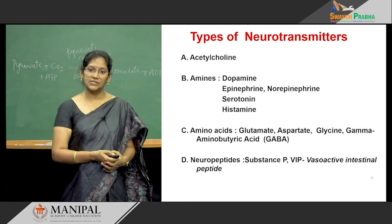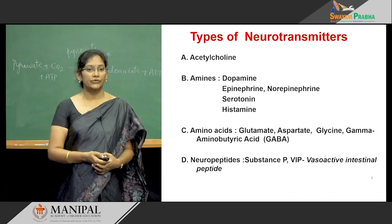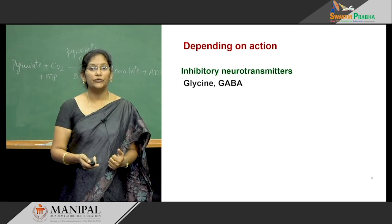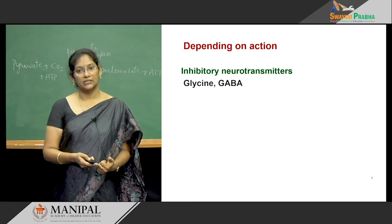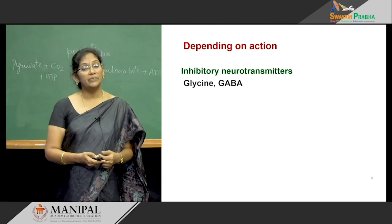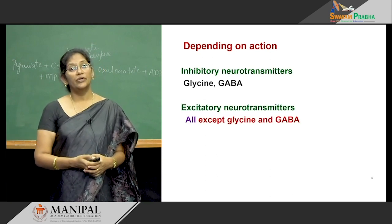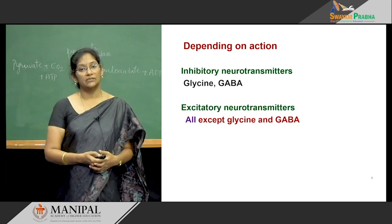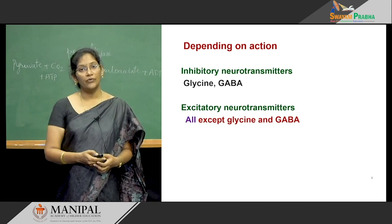Other neuropeptides — that is substance P and the vasoactive intestinal peptide — also act as neurotransmitters. Depending on their action, there may be two different types: inhibitory neurotransmitters and excitatory neurotransmitters. The inhibitory neurotransmitters include glycine and GABA, that is gamma-aminobutyric acid. All the other types come under the excitatory neurotransmitters except glycine and gamma-aminobutyric acid.